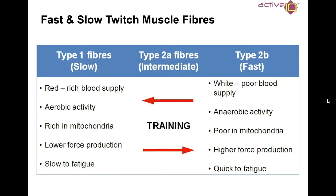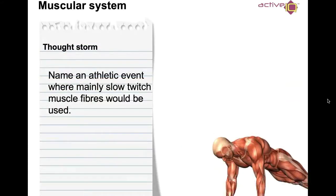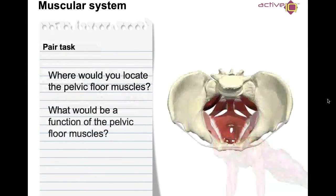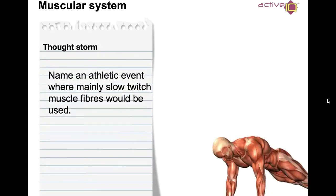It depends on how you train — aerobically or anaerobically. For example, name an athletic event that mainly uses slow twitch fibres. Distance running — marathon runners would use slow twitch fibres — whereas fast twitch muscle fibres are going to be used in sprint events.